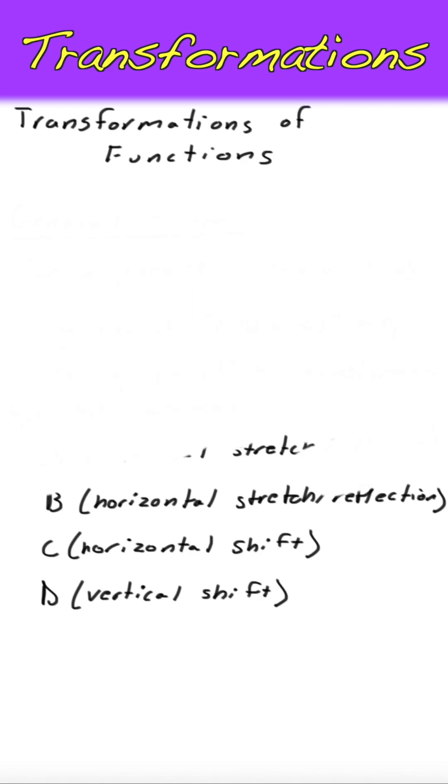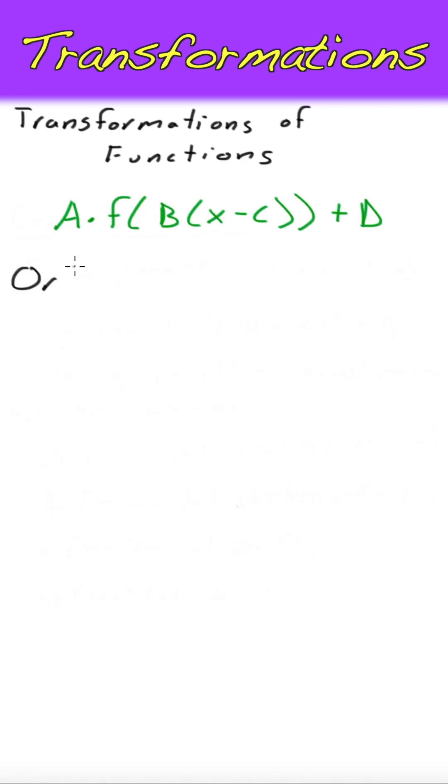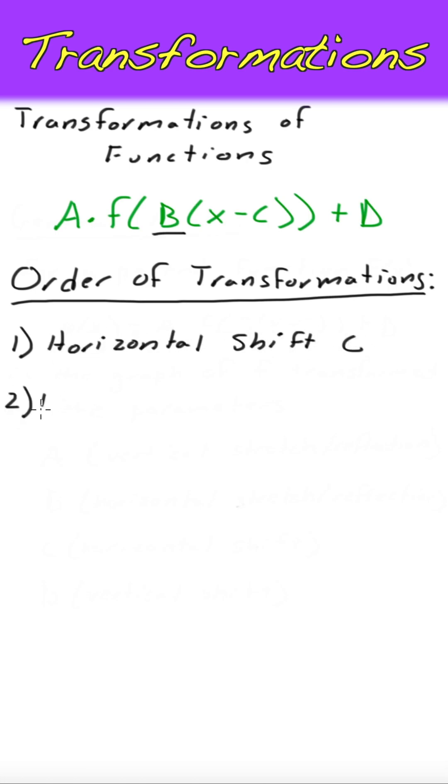Then, following the order of operations, we can identify how our graph is transformed. Beginning inside the parentheses, c is first to act on our input, so we'd start by shifting horizontally. Next, b determines our horizontal stretch or compression. Then a determines our vertical stretch, and finally d determines our vertical shift.